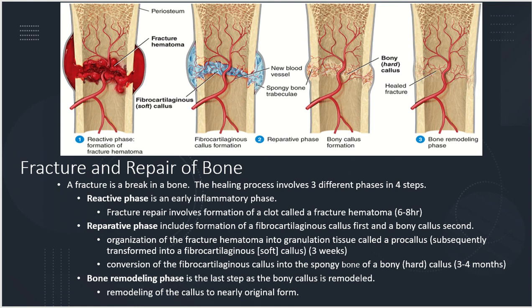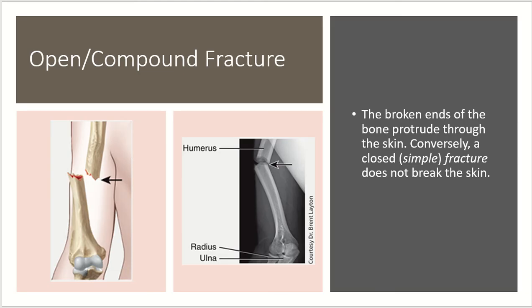Now let's look at a couple of different kinds of fractures. The first is the open or compound fracture, when the broken ends of the bone protrude through the skin. Conversely, a simple or closed fracture does not break through the skin. So the bone is still broken no matter what, but it's compound or open if the bone is sticking out.